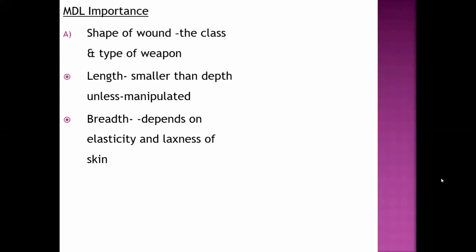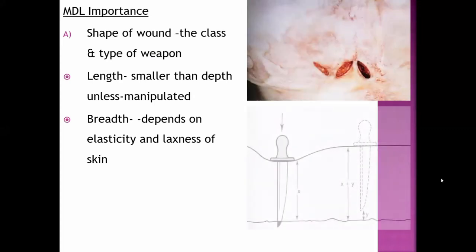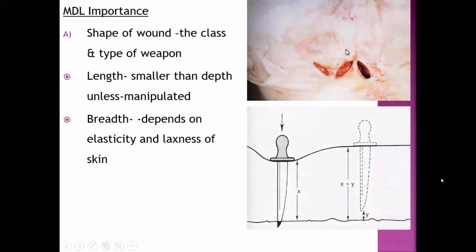Breadth depends upon the elasticity and laxness of the skin, and you can see this spindle-shaped wound even in case of stab injury. If you see this kind of wound, then you know that the weapon that was used is double-edged. Both edges of the weapon are sharp.